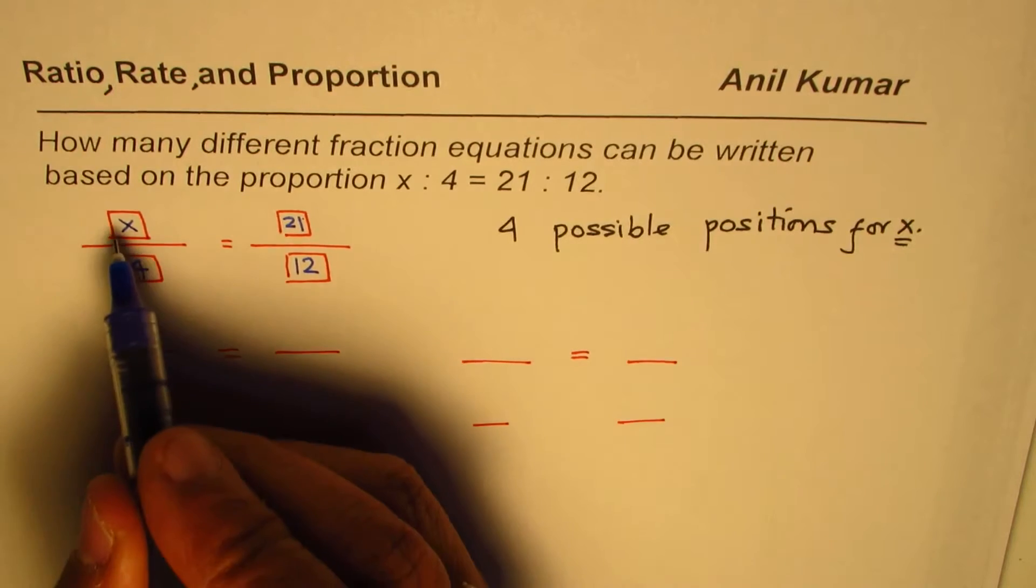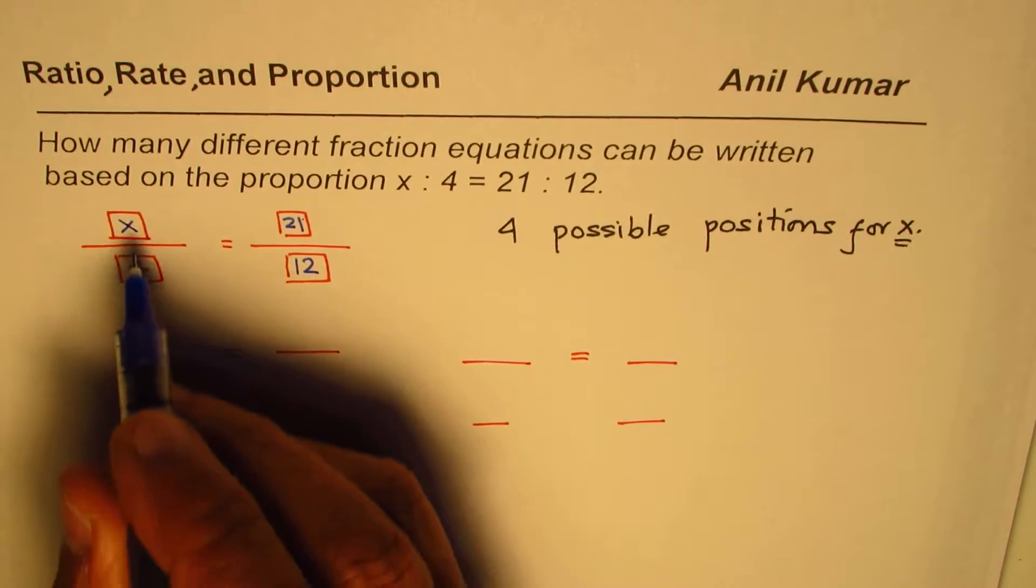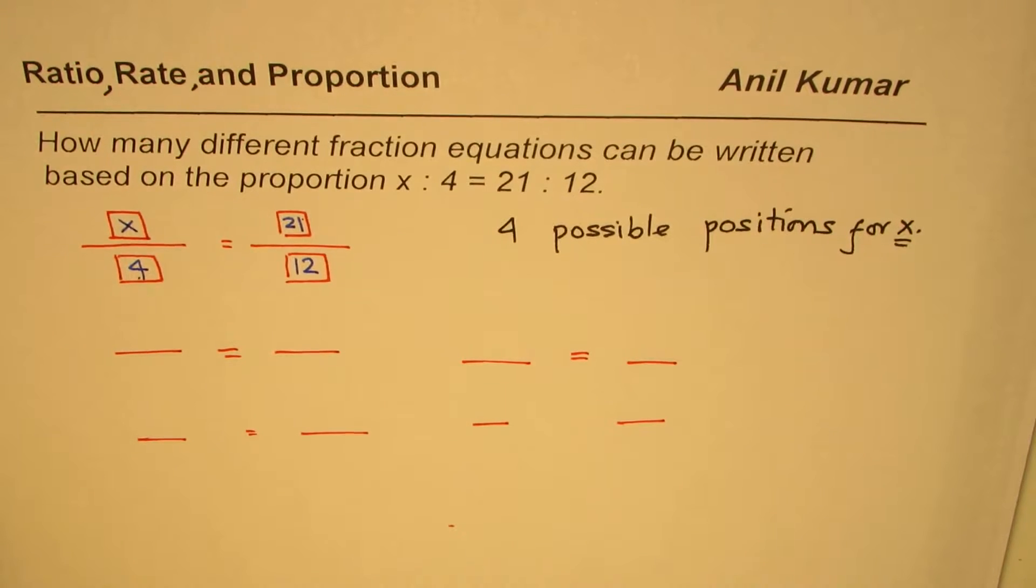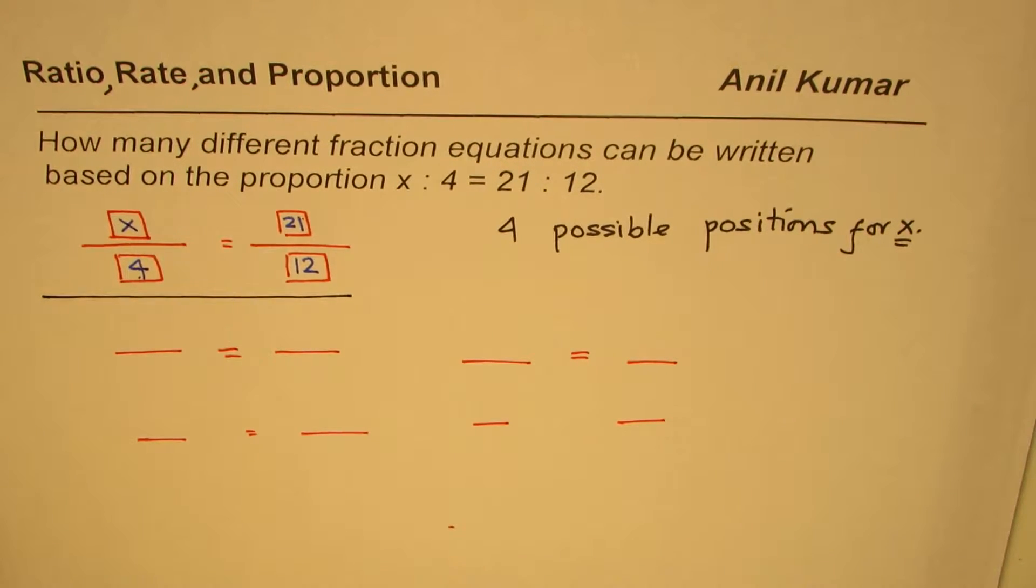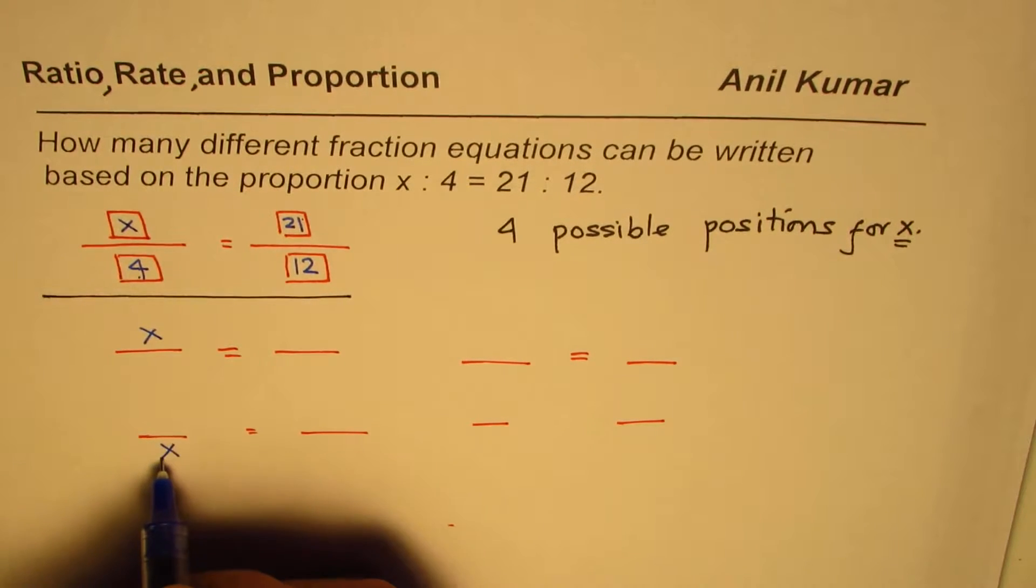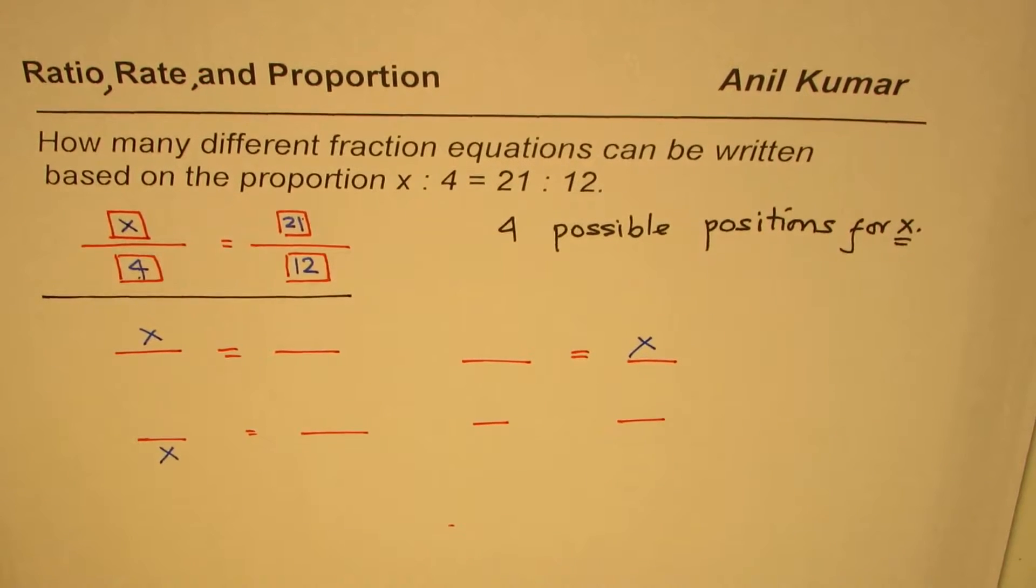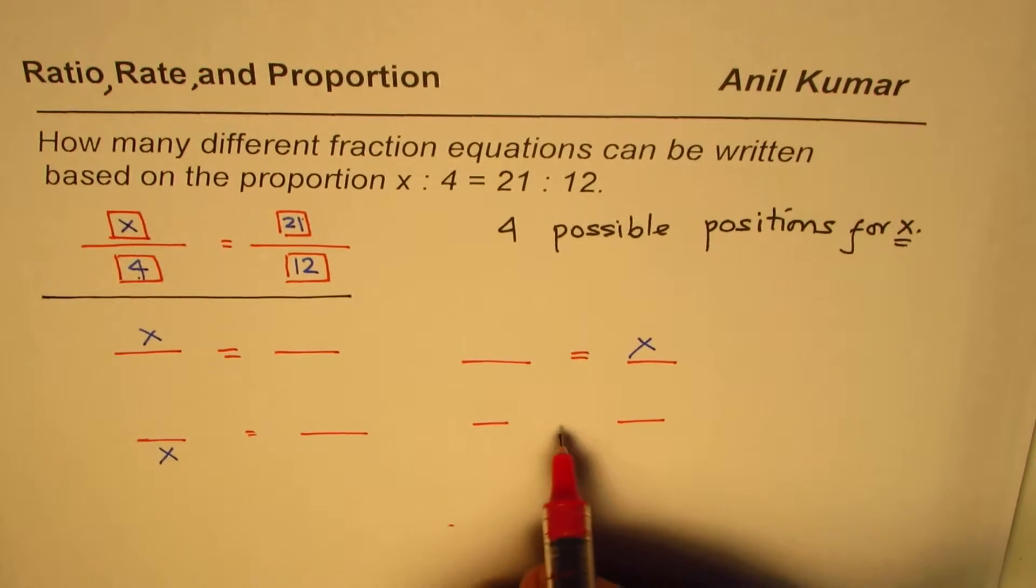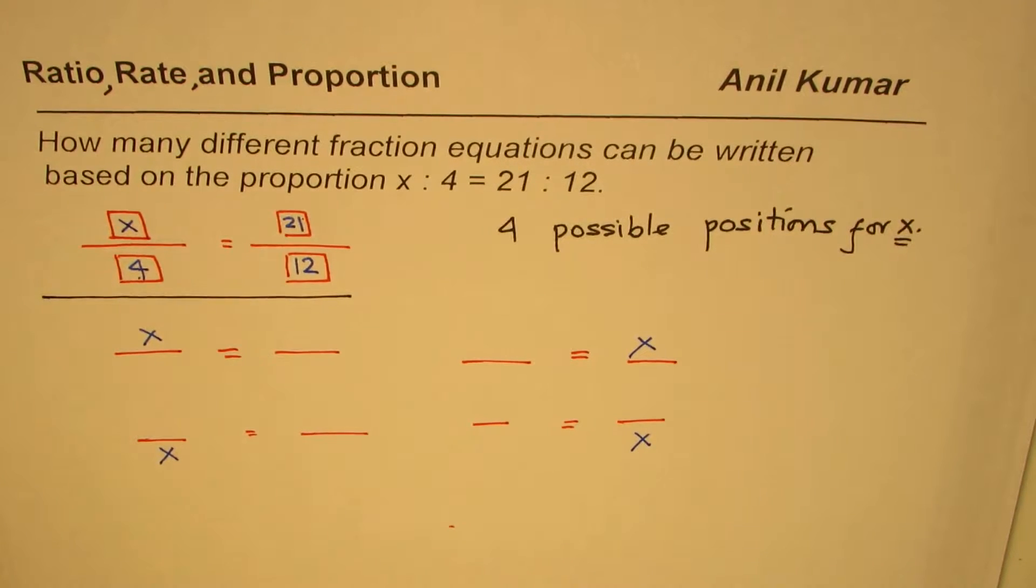So I could place x either here as I have done. Let me redo. So this was an example, so let's forget about this. So let's find all possible places. We could put x here. We could put x at the bottom. In this case, we could place x on the top, on the right-hand side, or we could place x at the bottom of this. Do you see that? So there are 4 possible positions for x.